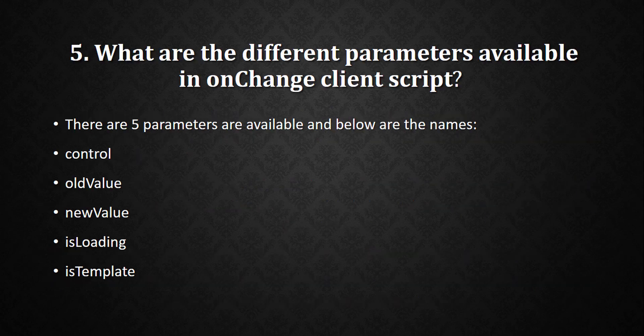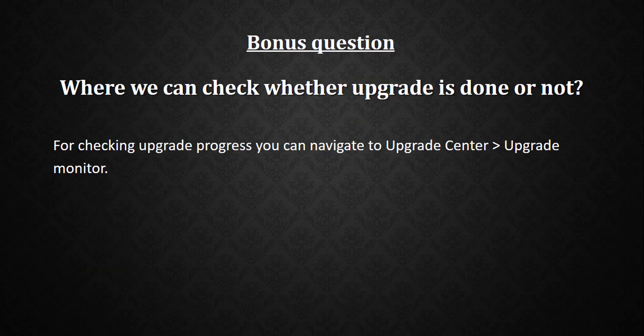The next question is: what are the different parameters of the label in an onChange client script? This is a very important question. There are five parameters in total: first is 'control,' second is 'old value,' third is 'new value,' fourth is 'is loading,' and fifth is 'is template.' If you want to know the use case of each, refer to the ServiceNow docs.